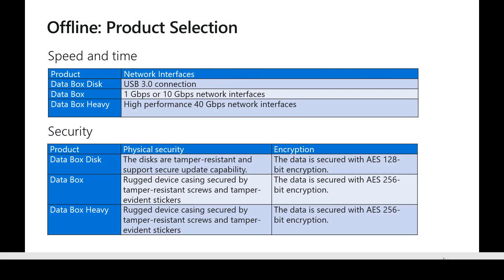When choosing which product to use, consider speed and time. Data Box Disk uses a USB 3 connection so it's relatively slow. For higher bandwidth when copying data, the regular Data Box provides a 1 Gbps or 10 Gbps network interface. Data Box Heavy provides a 40 Gbps network interface. Regarding security, Data Box Disk is encrypted with AES-128, whereas the regular Data Box and Data Box Heavy are encrypted with AES-256. Almost all these devices are tamper-proof.